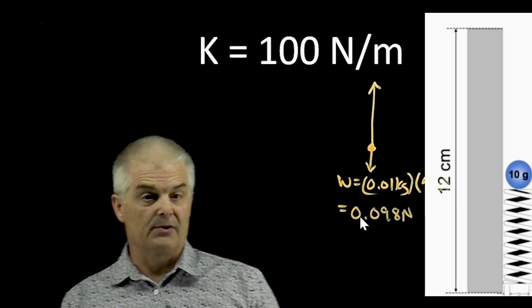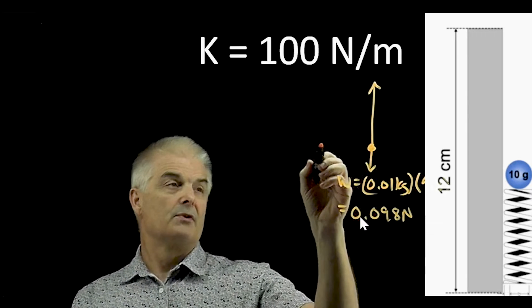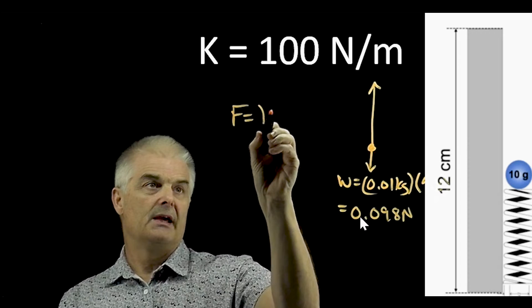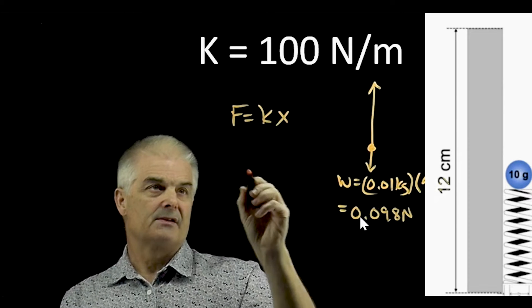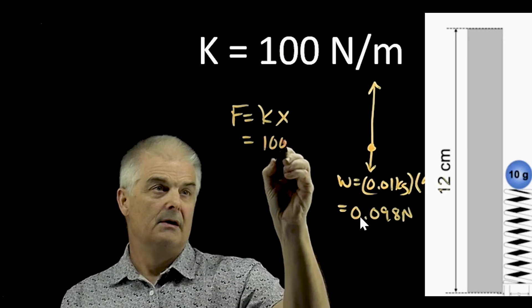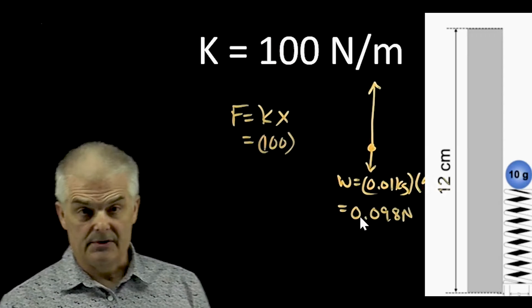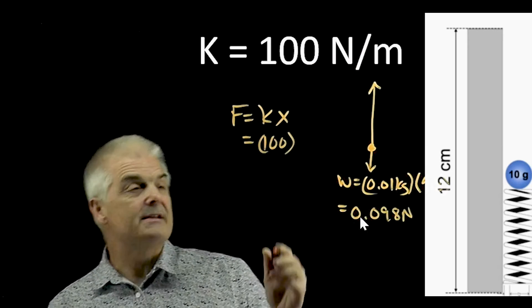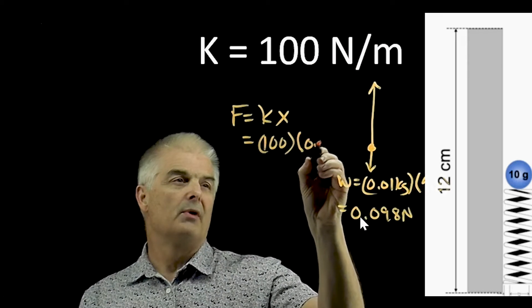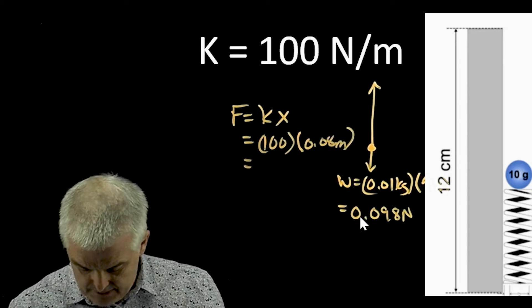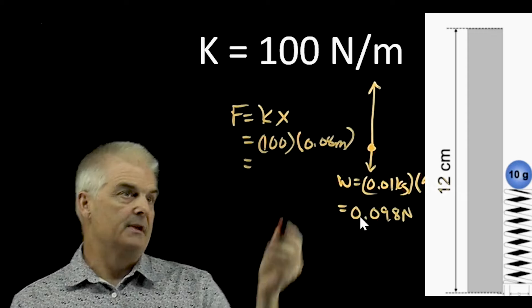and then the force up, let's think about what the force up is going to be. The force up is going to be F equals K times X, and the constant we can see is 100, and the X—now what's the deal with the X? You're going from 12 to 4, from 12 to 4, that's 8 centimeters, or 0.08 meters. So the force upward, well, that's 8 newtons.